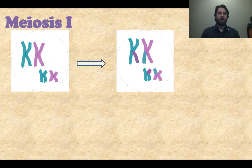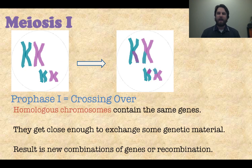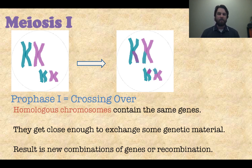Now let's start with prophase I. One of the things that happens during prophase I is called crossing over. That's when homologous chromosomes — chromosomes that contain the same genes — get really close to each other and actually exchange some genetic material. You can see in the diagram that the blue and purple chromosomes have crossed over, exchanging some material before any division has occurred. This results in a new combination of genes, which we call recombination.